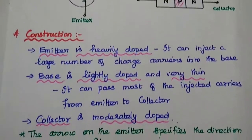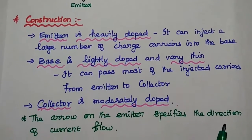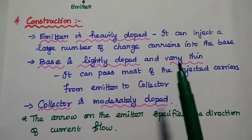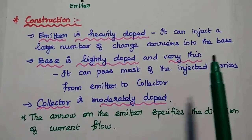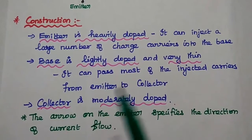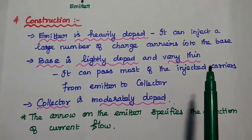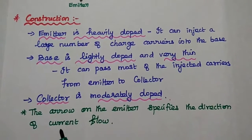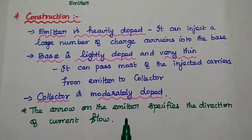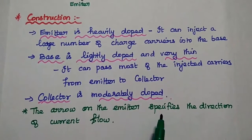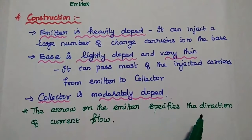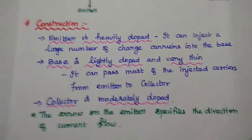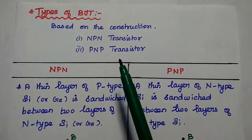Emitter is heavily doped so that it can inject a large number of charged carriers into the base. Base is lightly doped and very thin. Collector is moderately doped. The arrow on the emitter terminal represents the direction of current flow. Next, the types of BJT.